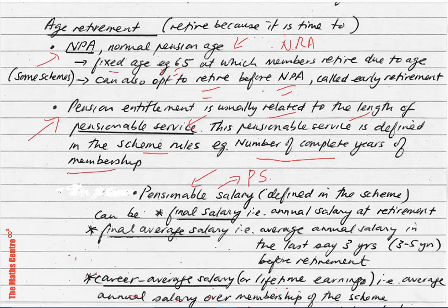Let's say our retirement age is 65. When we talk about final salary, we're talking about the annual salary at retirement — the salary you earn from age 64 to 65. The final average salary is your average annual salary in the last three or five years before retirement. If it's three years, we take the salary for each of those three years, add them up, and divide by three.